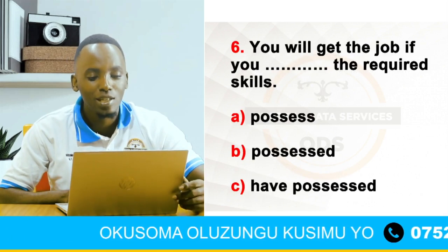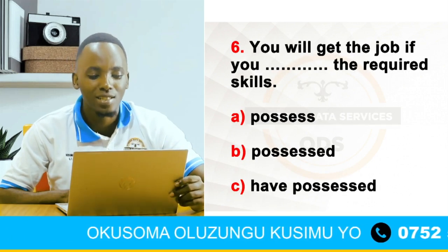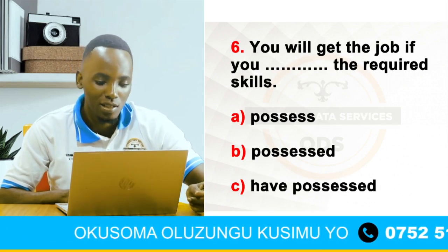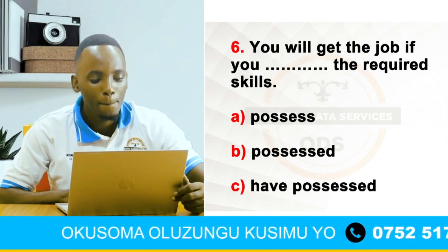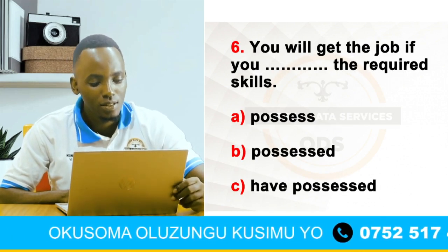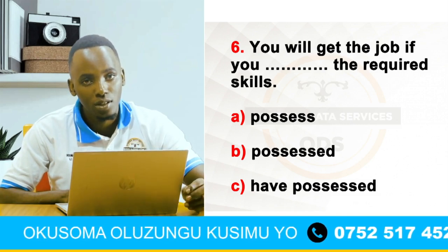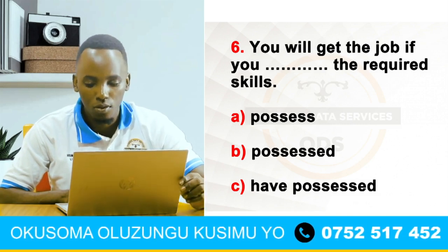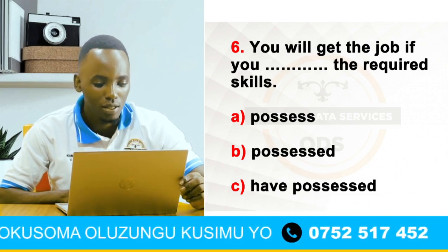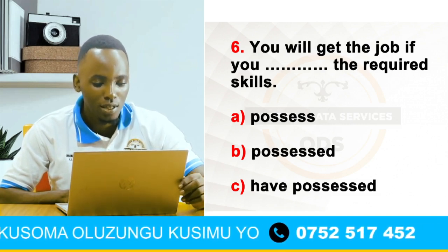Number six is: you will get the job if you dash the required skills. Alternatives: possess, possessed, have possessed. Pick from those and get the correct answer.